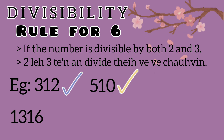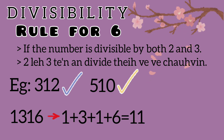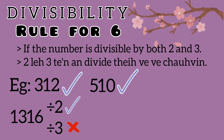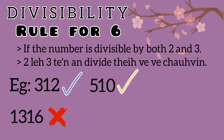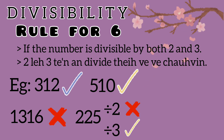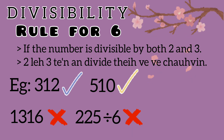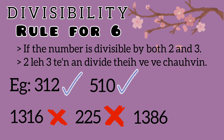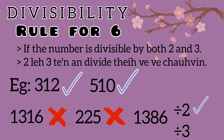Example: 1316. Let's check: last digit is 6, so it is even. Sum of digits: 1 plus 3 plus 1 plus 6 equals 11. We check if it is divisible by 2 and 3 to determine if it is divisible by 6.